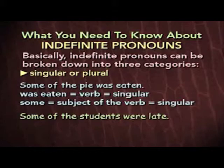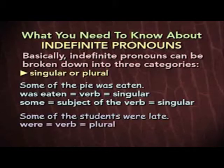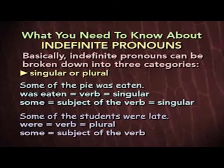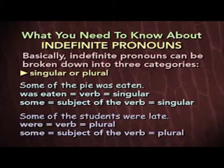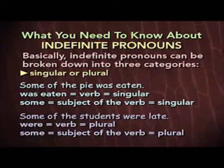However, look at the second sentence: 'Some of the students were late.' Here the verb is 'were,' a plural verb. Why is a plural verb used? The subject is the indefinite pronoun 'some,' but in this sentence, some refers to more than one person — two, three, four, a group of students. Therefore, it refers to a plural subject, and that's why the plural verb 'were' is correct. So we have the same indefinite pronoun as the subject in each sentence, but in one case the subject is singular, in the other it's plural. That's the way it is with the SANAM pronouns.